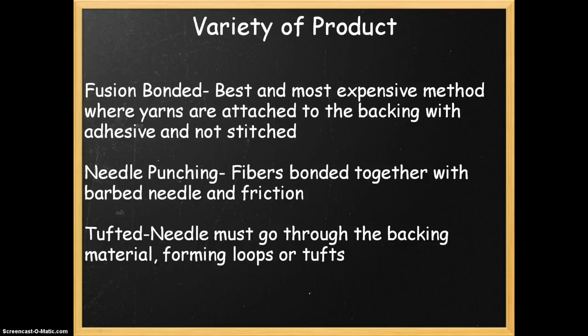Variety of products deals with different methods of construction to create carpet tiles. One method is fusion bonding, a thermoplastic process where yarns are attached to a backing material by adhesion instead of stitching, which is used in tufted carpets. This method has the greatest percentage of yarn available for wear, but it's more expensive.